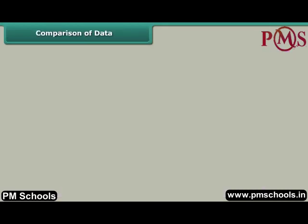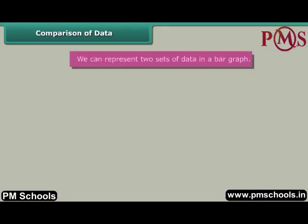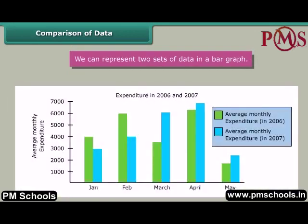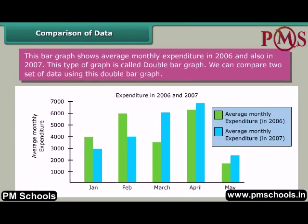Comparison of data. We can represent two sets of data in a bar graph. This bar graph shows average monthly expenditure in 2006 and also in 2007. This type of graph is called a double bar graph, and we can compare two sets of data using it.